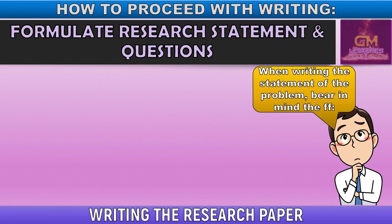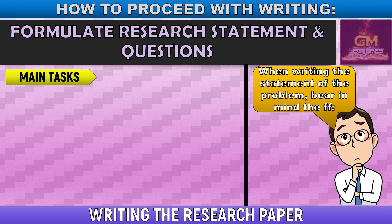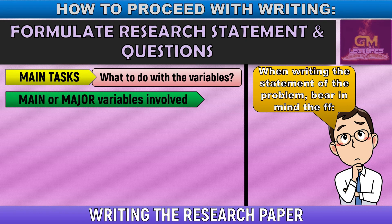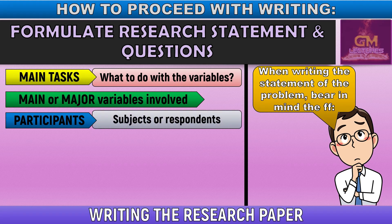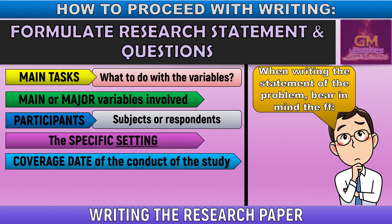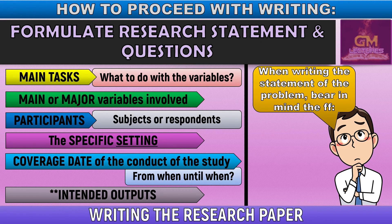When writing the statement of the problem, bear in mind the following: first, what are the main tasks you're going to do in your study — what will you do with the variables? Second, what are the main or major variables involved? Third, who are the participants — the subjects or respondents in your study? Fourth, explain the specific setting, which narrows the study in terms of research context. Next, the coverage date of the study, answering from when until when. And lastly, the intended outputs — what results do you expect at the end of the study?